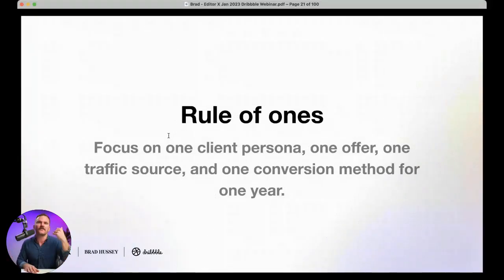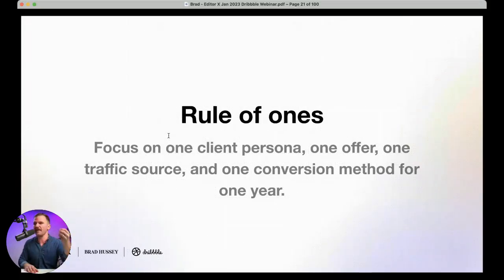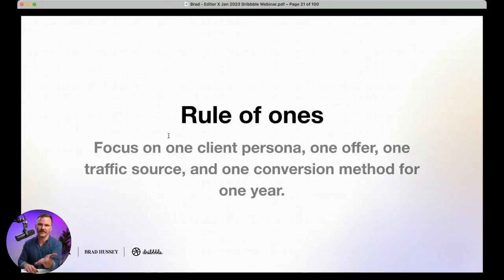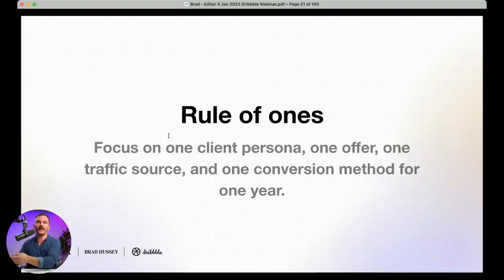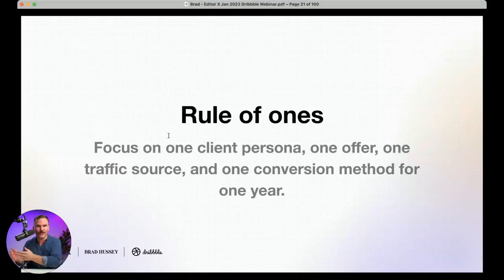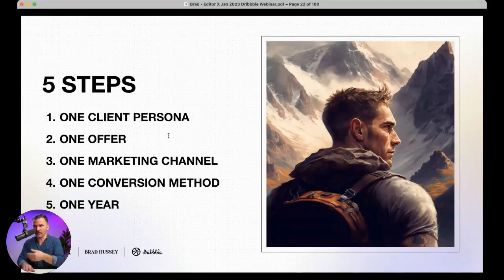Here's the concept: the Rule of Ones. This is the secret sauce — the answer to your success. Focus on one client persona, one offer, one traffic source, and one conversion method for one year — and you're definitely going to see something amazing happen in your business. The closer you get to this, the better results you'll see. Nobody nails this perfectly, but the closer you can get to this bullseye, the more success you'll see. These five steps work because complexity kills progress.